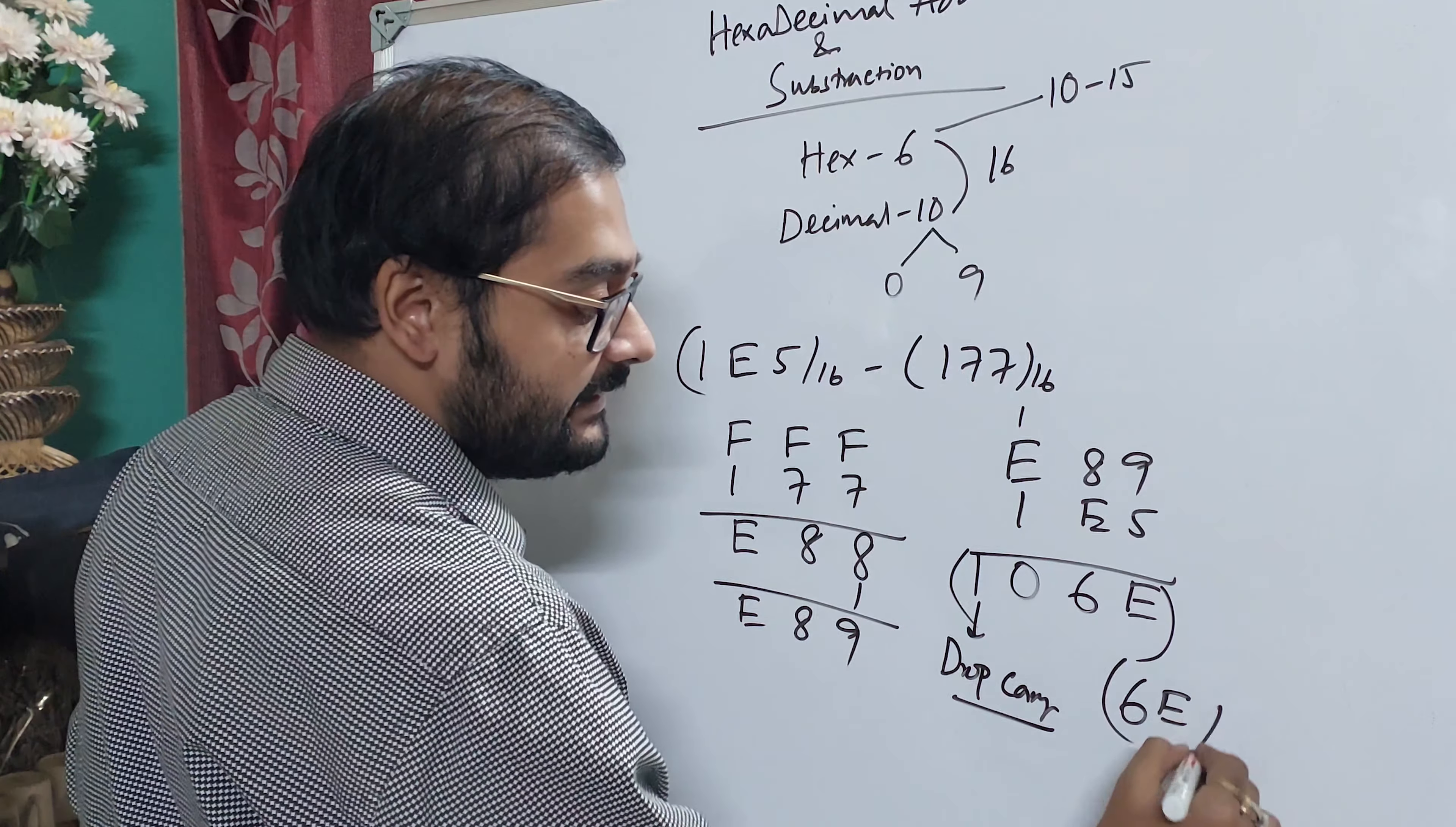There are two numbers: 1E5 base 16 minus 177 base 16. We can subtract these numbers. What do we do? This is 177. We take the 16's complement. For all compliments, I will give you the link. Basically, we have the 16's complement. The 16's complement is 15's complement plus 1.